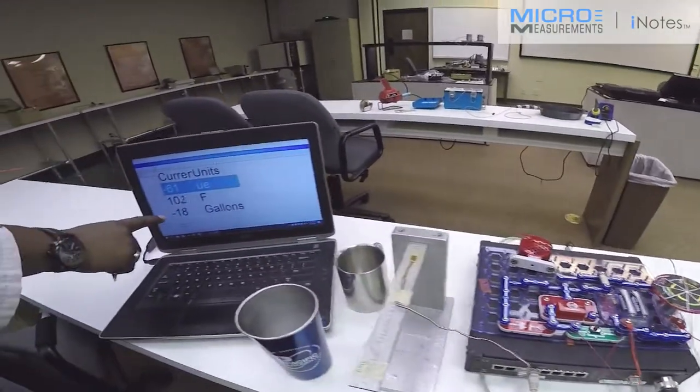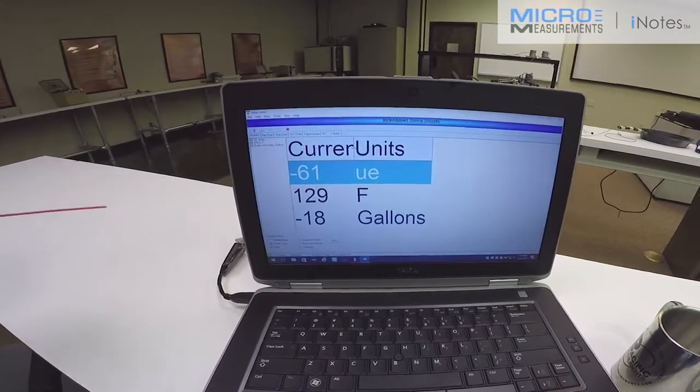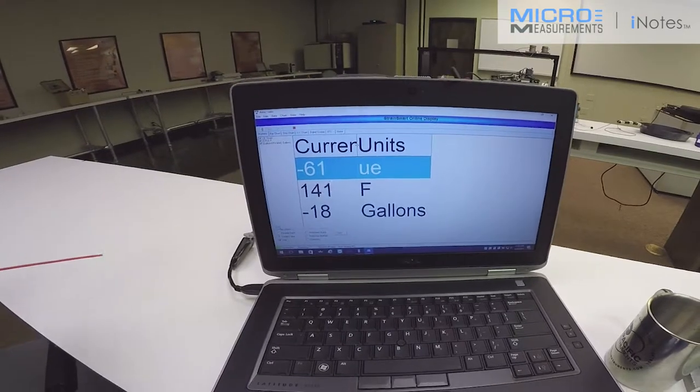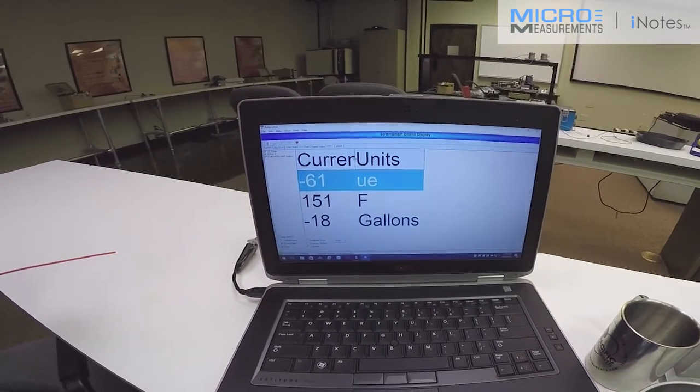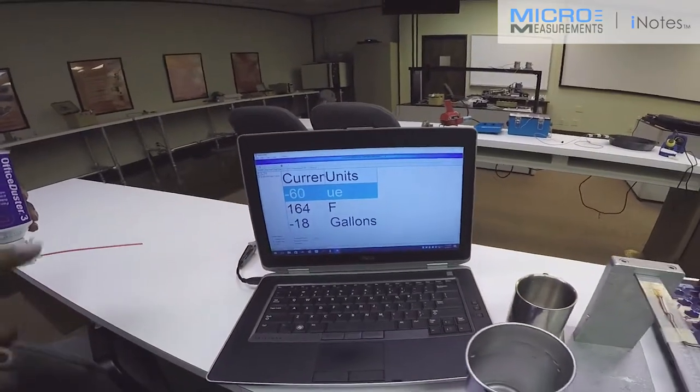And as we monitor the temperature, simulating the CPU heating back up again, eventually we'll get to our critical temperature, our minimal temperature, and the fans will come on again and start to cool down the CPU once again.